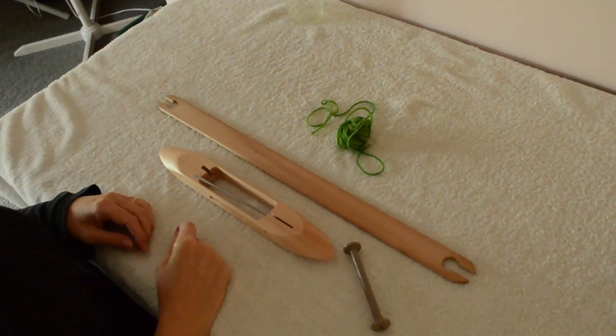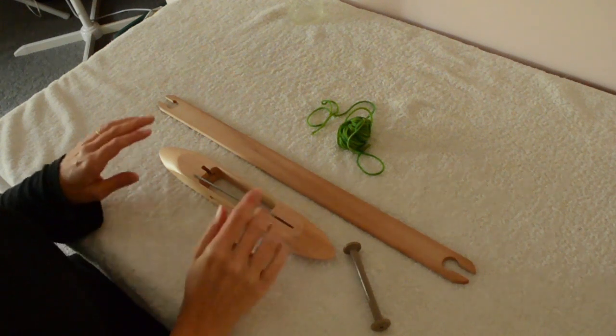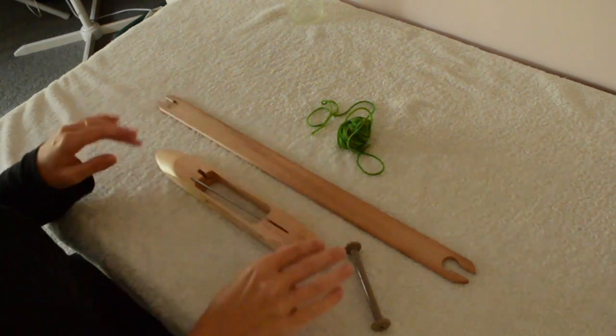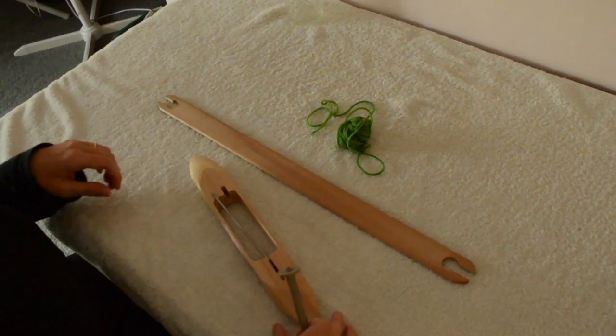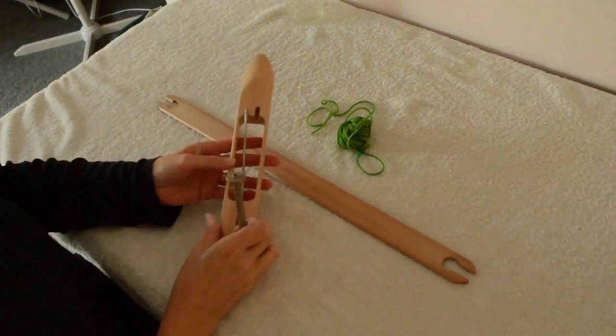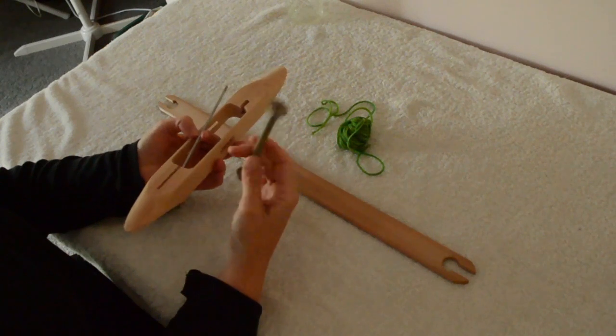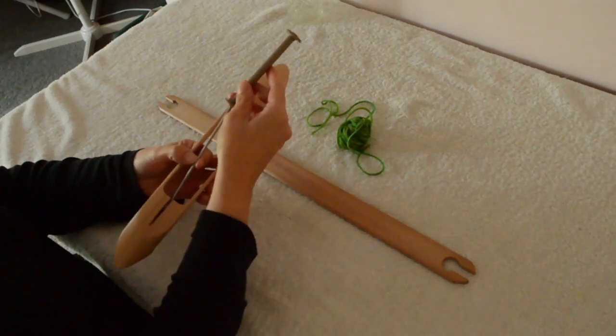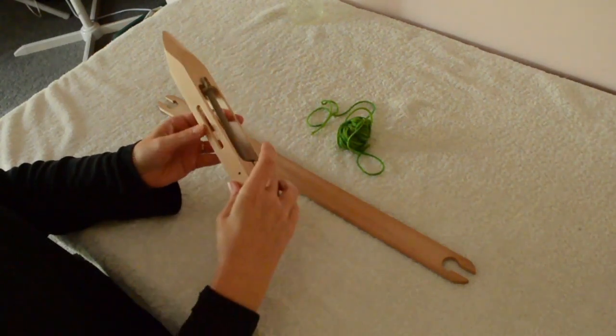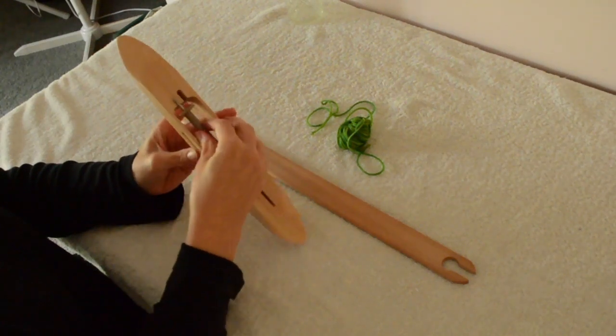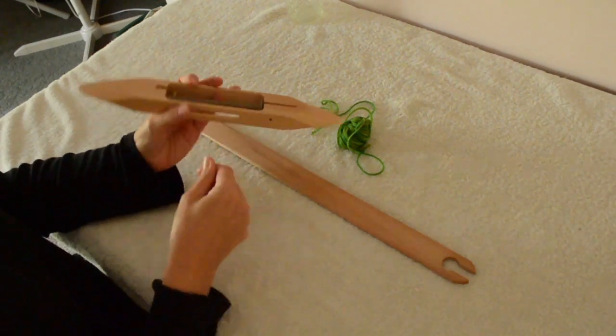The two types of shuttles you might be using with a rigid heddle loom are a boat shuttle and a stick shuttle. The boat shuttle—I love this shuttle—you just load your yarn onto the spool, load it into here. The yarn comes out the front through the slit, you lock that in and just pull.